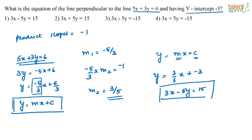So your correct answer will be 3x minus 5y is equal to 15, which is option 1. What you have to keep in mind here is that the product of the slopes of two lines which are perpendicular to each other is equal to minus 1.